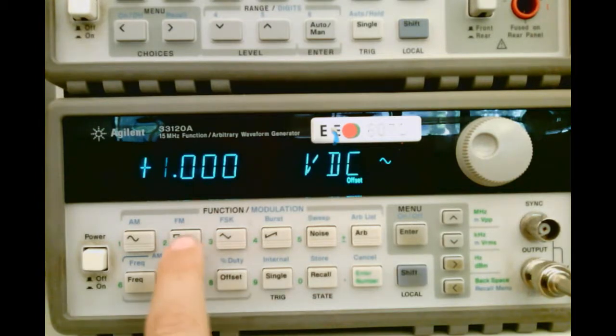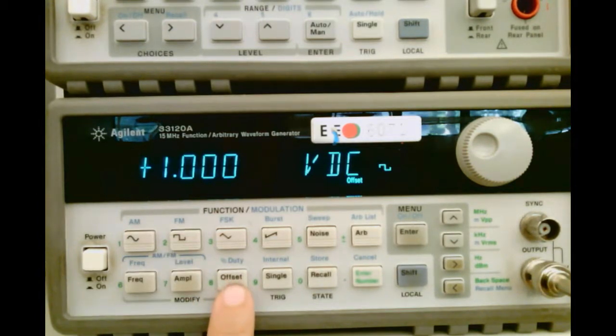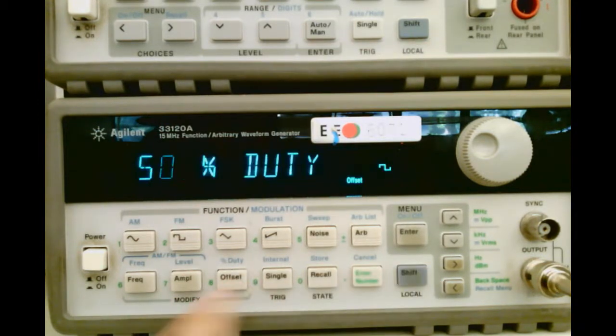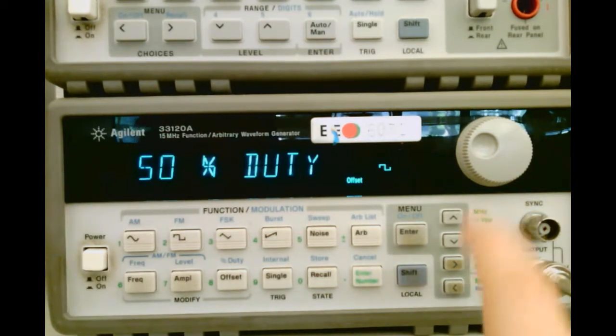And for a square wave, there's an additional setting you can do, which is the duty cycle. If you're on square wave, you can get to the duty cycle by hitting Shift-Offset and changing the duty cycle. I'll just arbitrarily pick 25 for this demo.